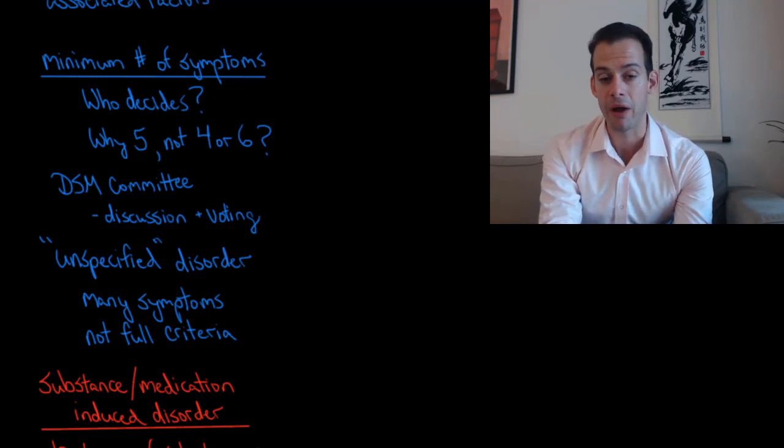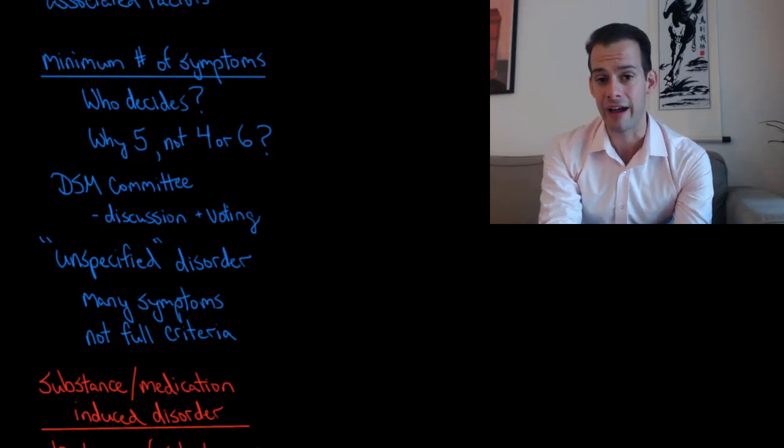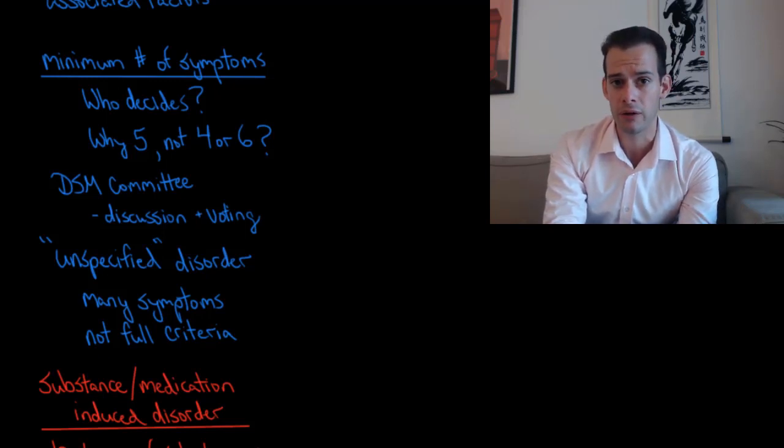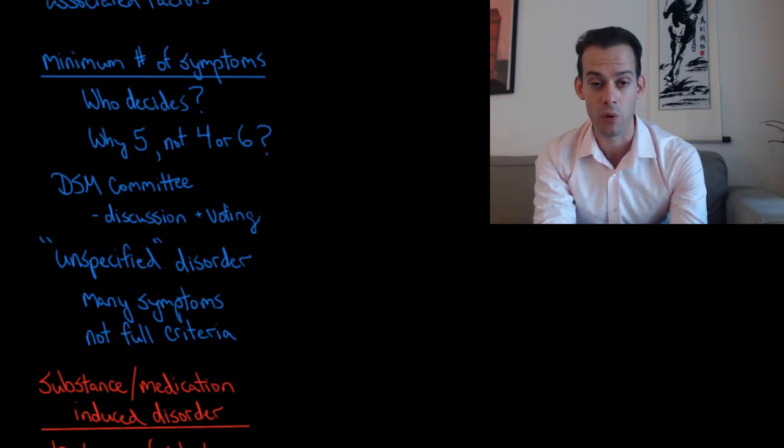And so you might wonder who decides? Or you might wonder why is it that it's five out of eight symptoms instead of four or six? And the answer of who decides is that the DSM committee has decided that that's the minimum number of symptoms for that particular disorder.